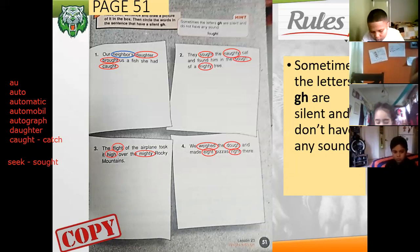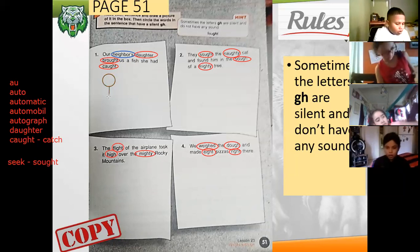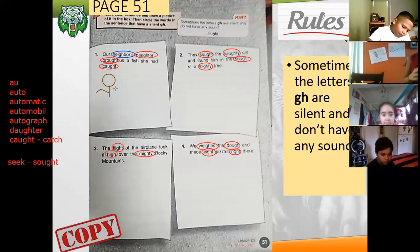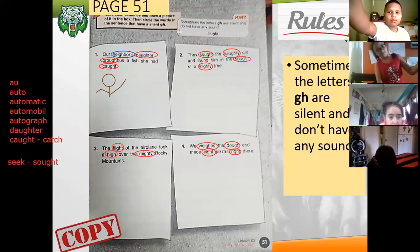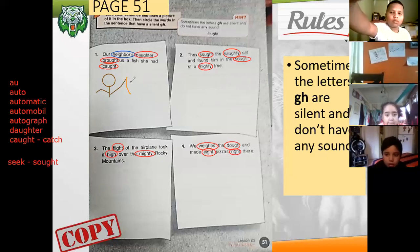Now the first instruction says that you have to draw a picture. Our neighbor's daughter brought us a fish she had caught. So what can we draw here? We'll draw here a girl, because it's our neighbor's daughter. So let's draw just a girl, because it's our neighbor's daughter. The daughter brought us a fish.